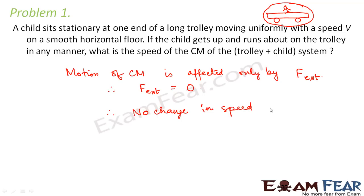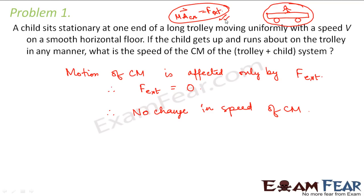Therefore, there is no change in the speed of the center of mass. Any movement of the child with respect to the trolley is internal. The equation we derived was: mass into acceleration of center of mass equals F external. So even when the child is moving, or when the child was not moving, the external force is zero. Therefore, there is no change in the speed of the center of mass.